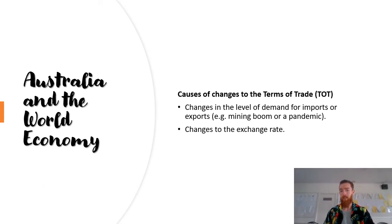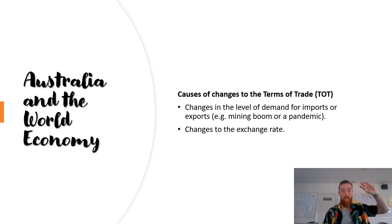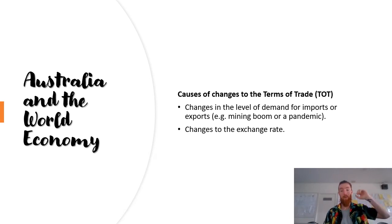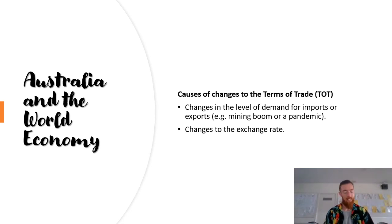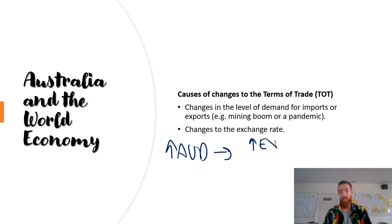Causes of changes in the terms of trade include changes in the level of demand for imports or exports. During the pandemic, the mining boom, or even right now, there has been intense demand for Australian commodities — especially iron ore — and it's relatively inelastic in demand, so the price has been driven up. Surging prices for one of our major exports has meant the terms of trade has risen a lot because our exports have been worth much more by comparison. Another cause is changes to the exchange rate — if the exchange rate appreciates, exports are worth more, increasing the export price index and decreasing the import price index, leading to an increase in the terms of trade in the short term.